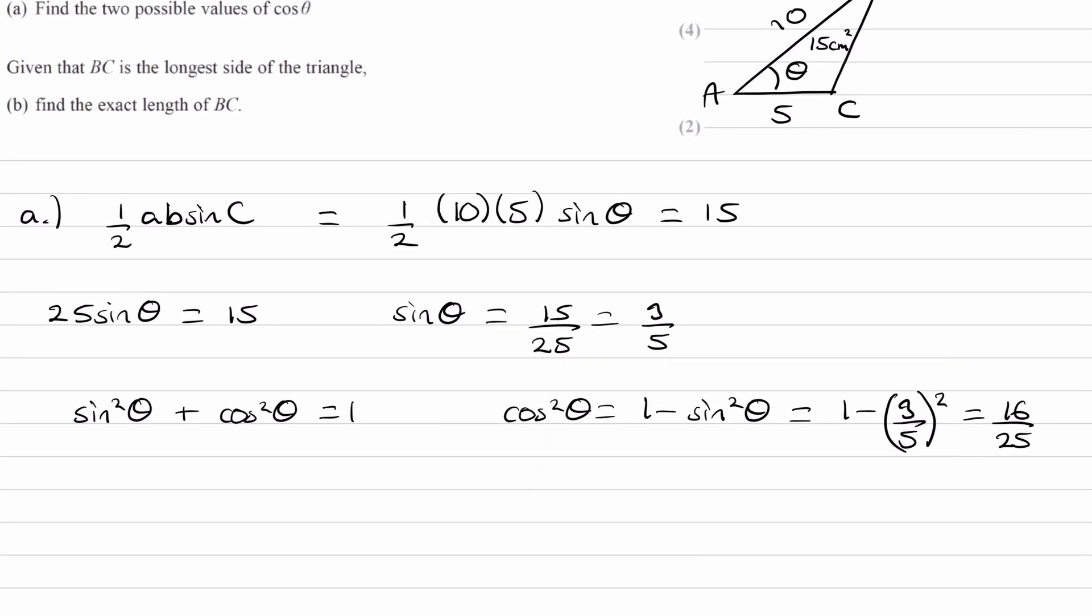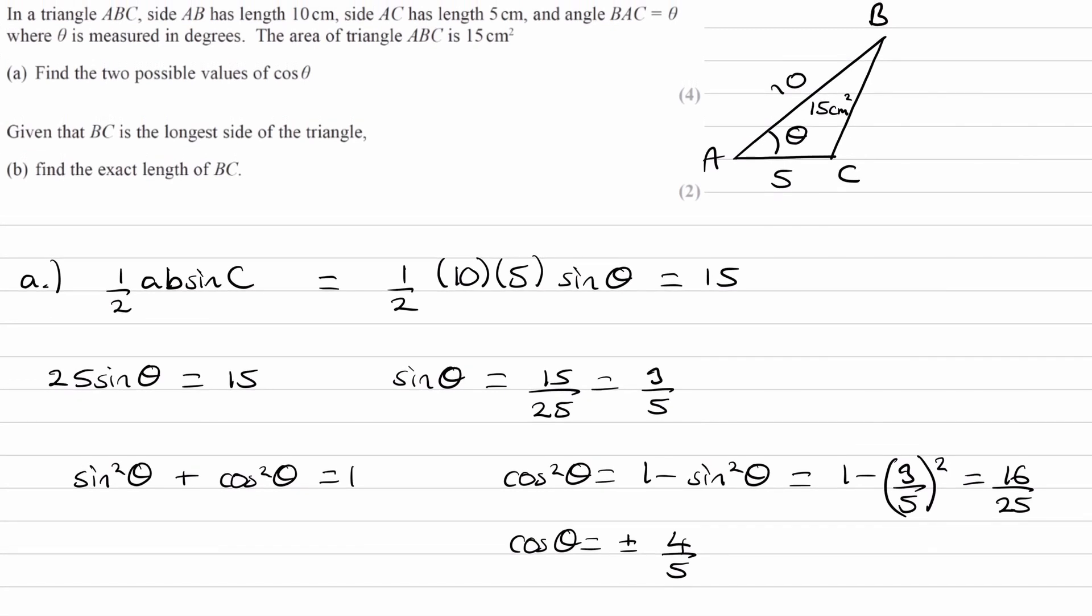Square root both sides, and we end up with cos theta equals plus or minus four over five. So those would be the two possible values of cos theta.